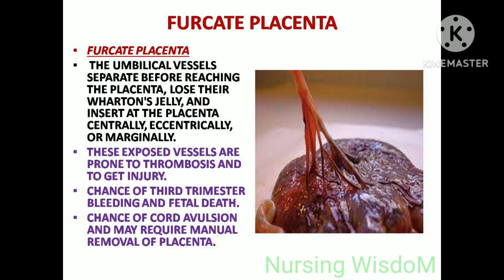Furcate placenta: the umbilical vessels separate before reaching the placenta, lose their Wharton's jelly, and insert at the placenta centrally, eccentrically, or marginally. These exposed vessels are prone to thrombosis and injury, with a chance of third trimester bleeding and fetal death. There is also a chance of cord avulsion, meaning rupture of the umbilical cord from its insertion site, which may require manual removal of placenta.